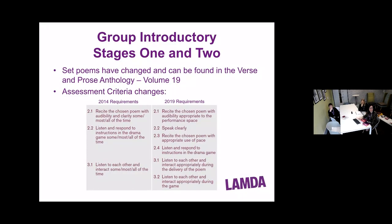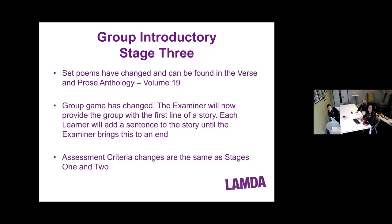The assessment criteria has been separated for children speaking. Audibility and clarity of diction — you'll notice across all syllabi these have been separated to make it fairer for examiners to comment against and assess. We've added in assessment criteria 3.2: to listen to each other and interact appropriately during the game. So one criterion assesses interaction for the poem and the other for the game, making it a bit fairer. For group introductory Stage 3, we've changed the game — the examiner will now provide the first line of a story.